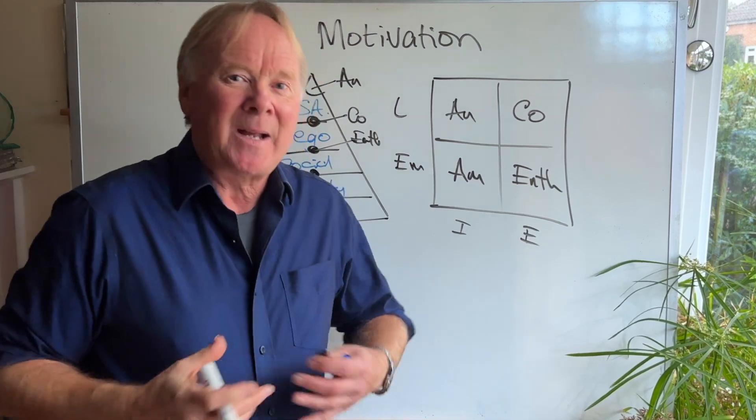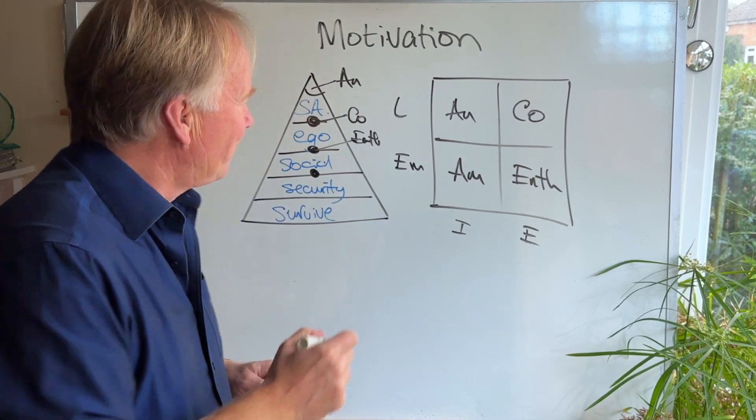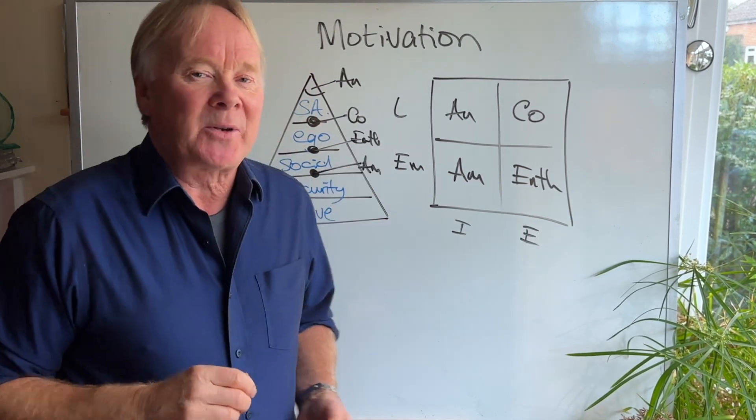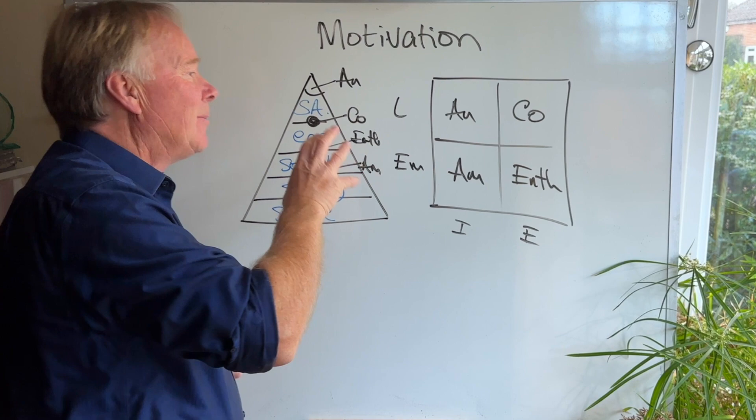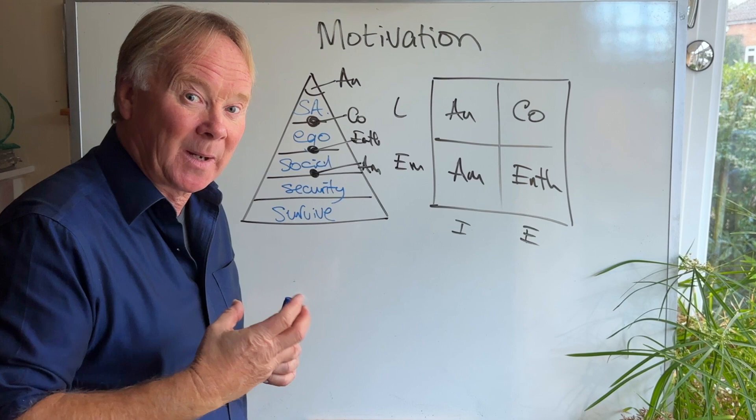They want everyone to be happy and everybody to be working together. They like that feeling of belonging. So that's the amiable. The idea is to give everybody everything, but really focus in on the things that that particular personality type is going to be motivated by.